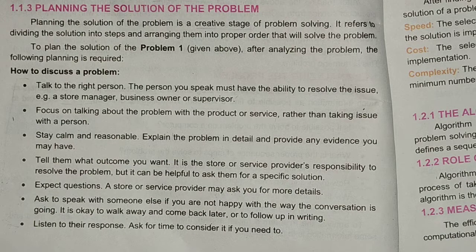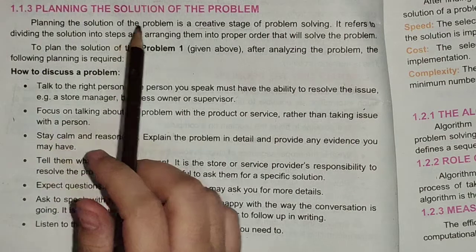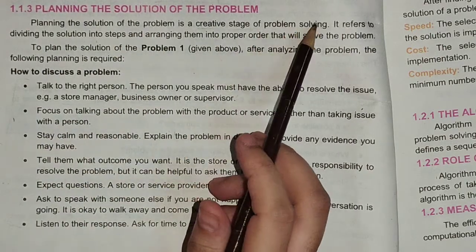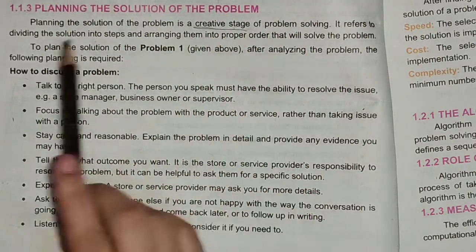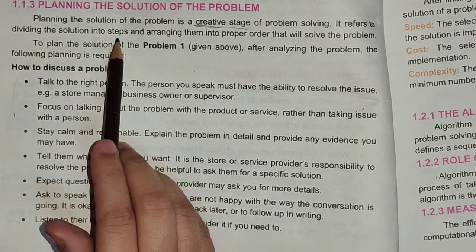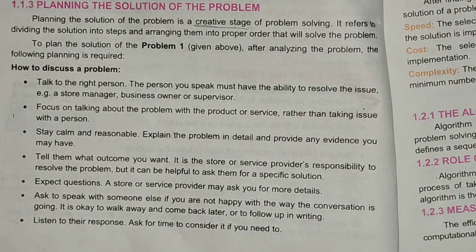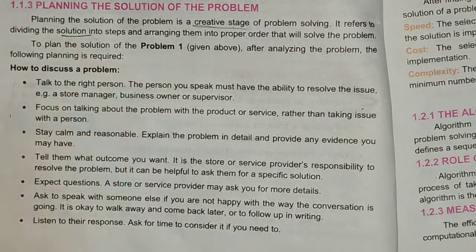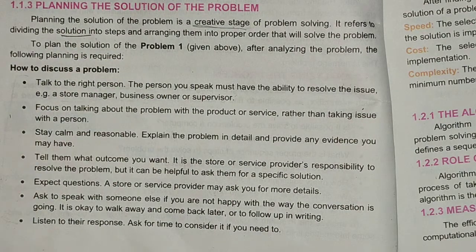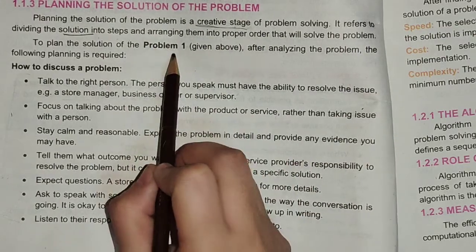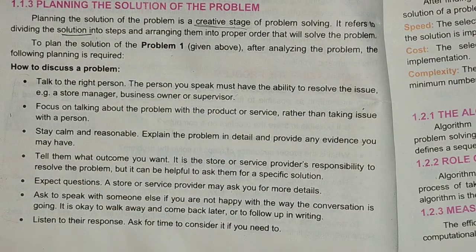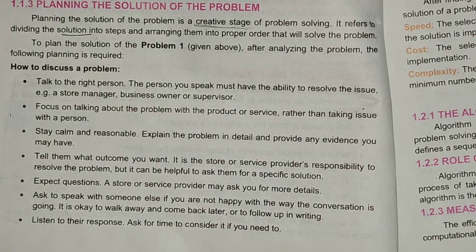This is the third stage of the problem solving method. Planning the solution of a problem is a creative stage. This is what we do — we divide the solution into different steps and arrange them in proper order, so that they will solve the problem.